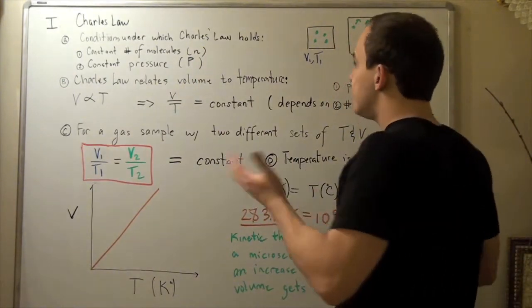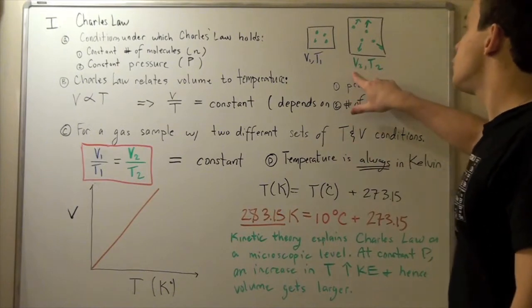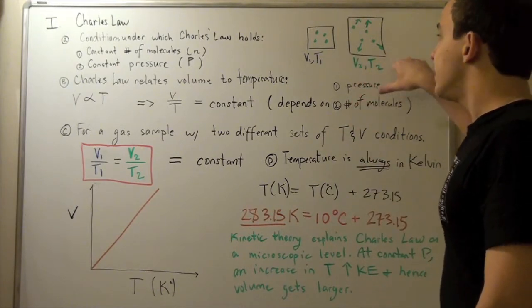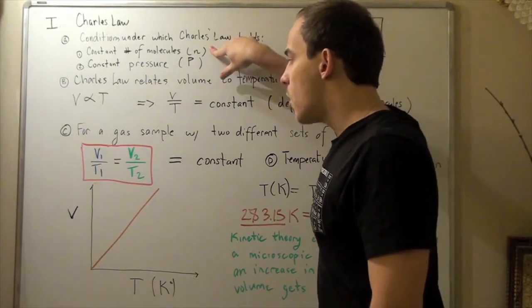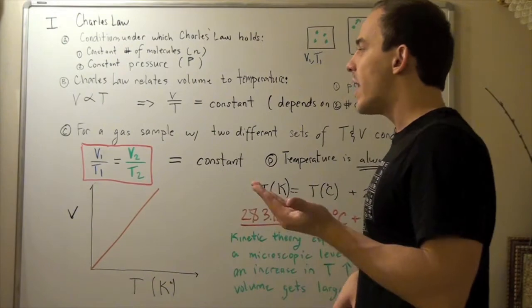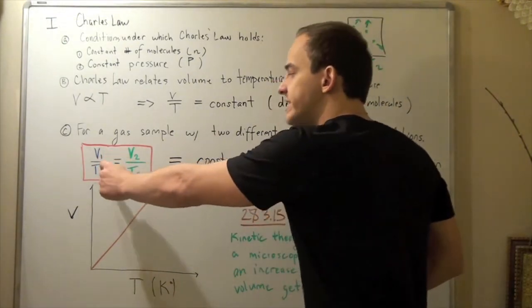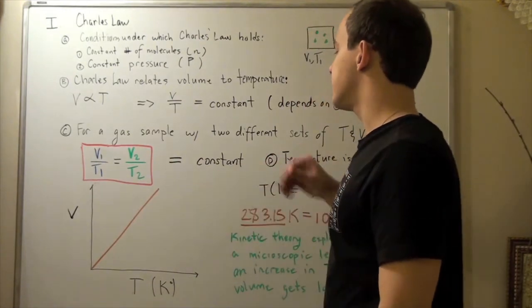If we have some conditions V1 and T1, and a second condition of V2 and T2, and these two conditions are under the same pressure and number of moles, that means our constant will be the same. And so, I can say V1 over T1 equals V2 over T2 equals that same constant.